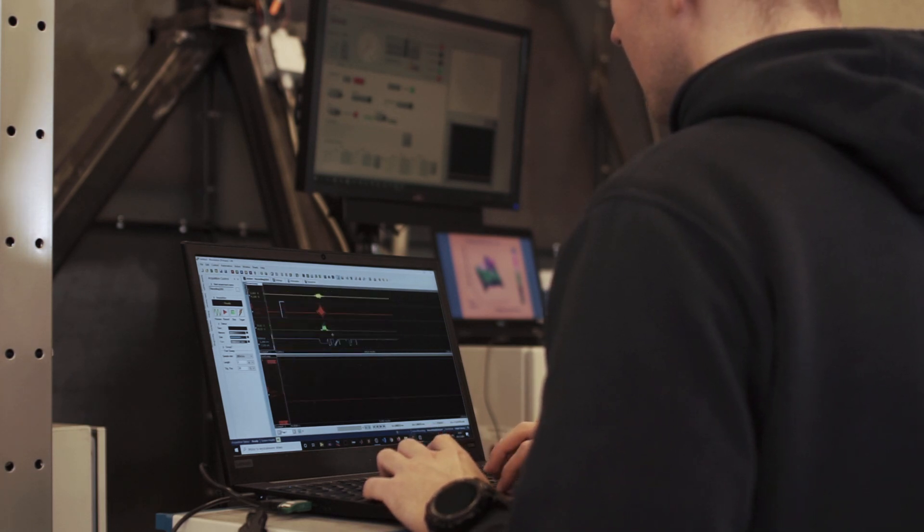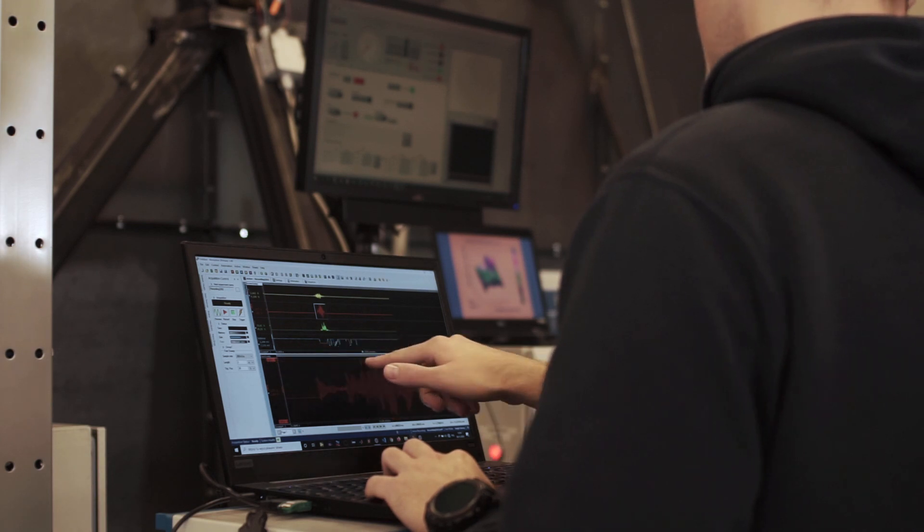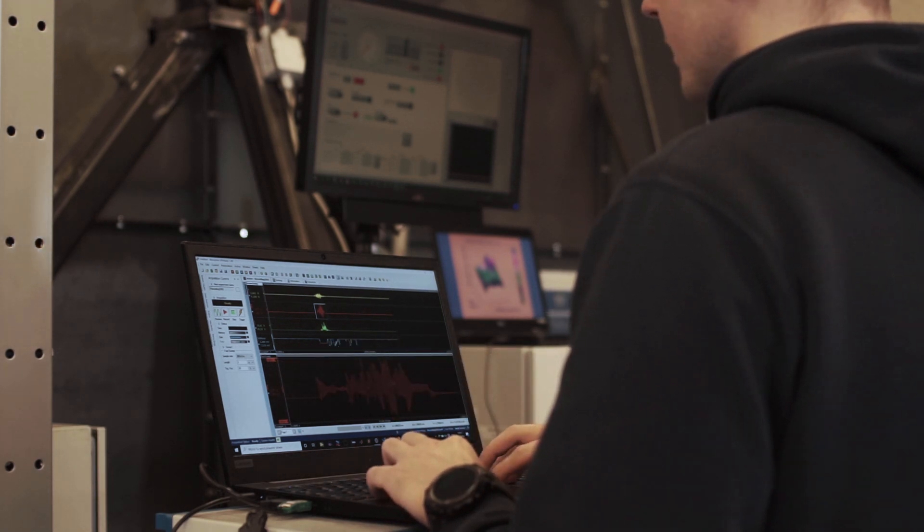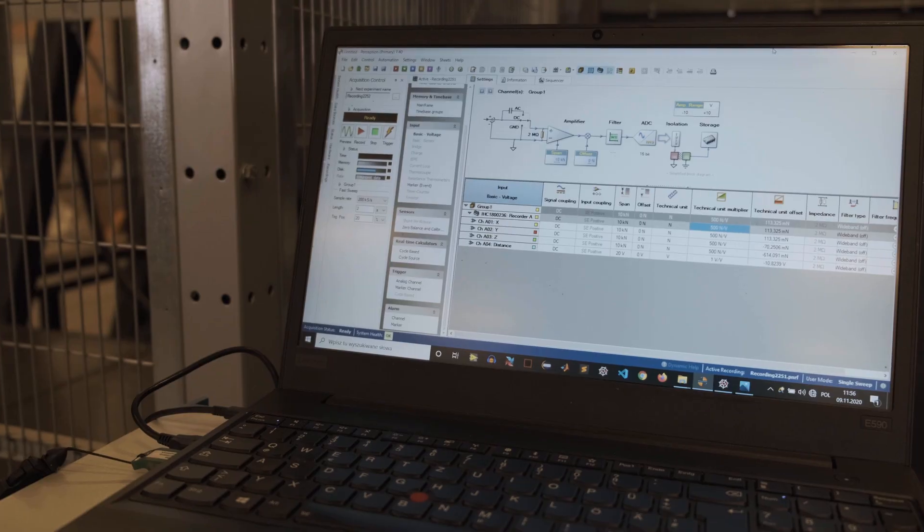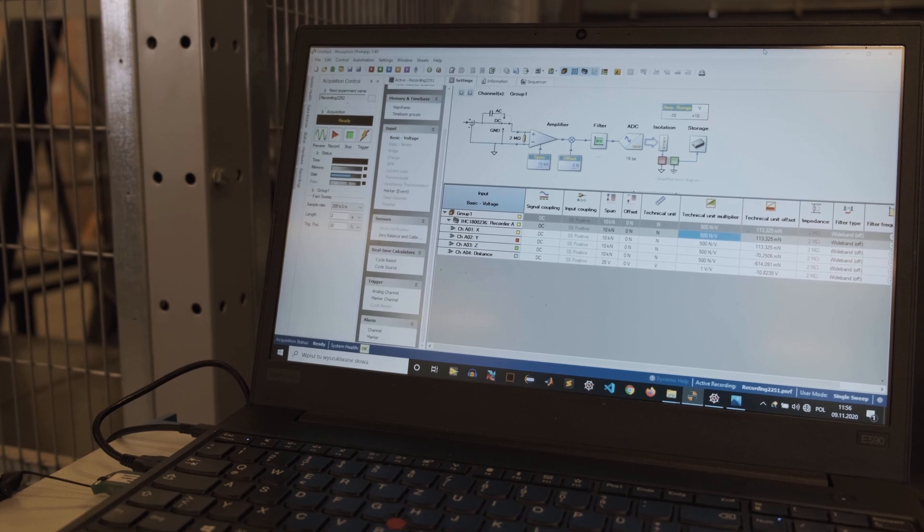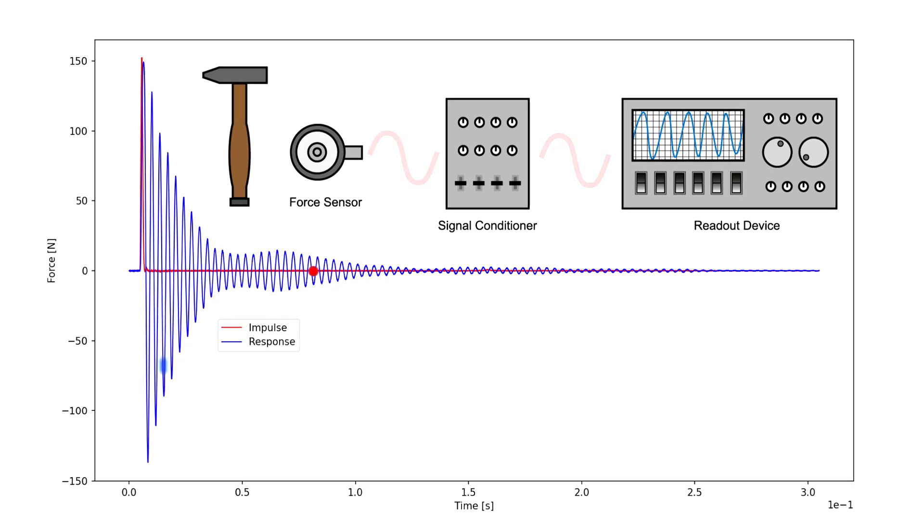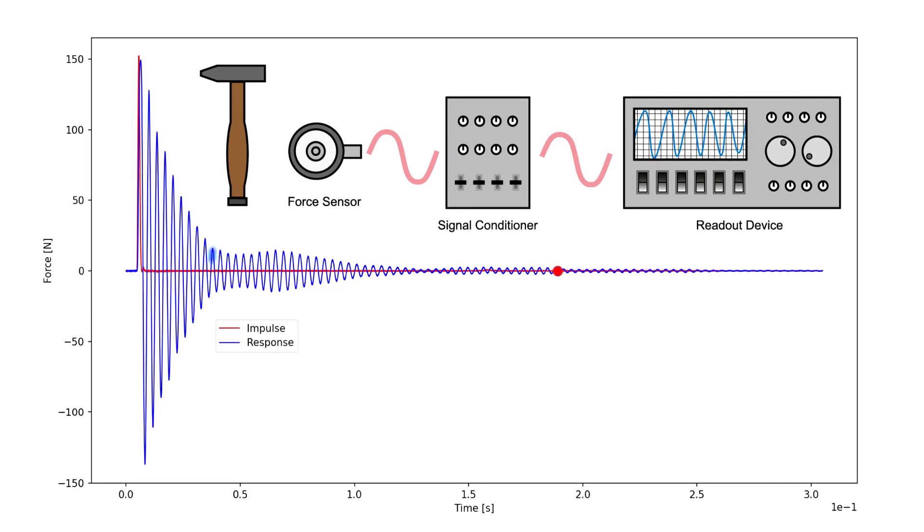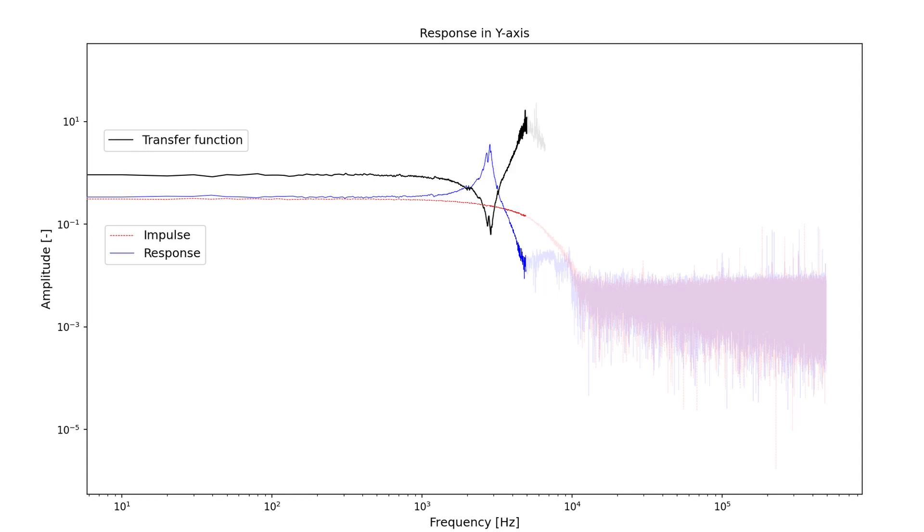To enable highly accurate cutting force measurements, it is necessary to optimize the dynamic properties of the entire measurement setup. Subsequently, the dynamic properties of the entire measuring chain had to be determined, as these form the basis for the subsequent data correction. By knowing the dynamic properties of the measuring chain, the actually occurring cutting forces can be calculated. For this purpose, a so-called inverse filter is calculated from the determined frequency response, which is then used for subsequent data correction.